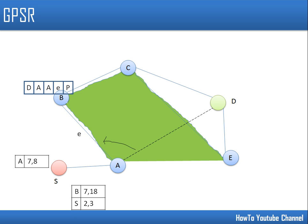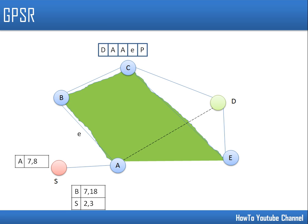Node b sees that node a is the point where greedy forwarding failed. Node b compares its own distance to d with the distance between node a and d. If b is closer to d than a was, b would switch to greedy forwarding. However, b is not closer to d than a, so b continues in perimeter forwarding and in the anticlockwise direction forwards the packet to node c.